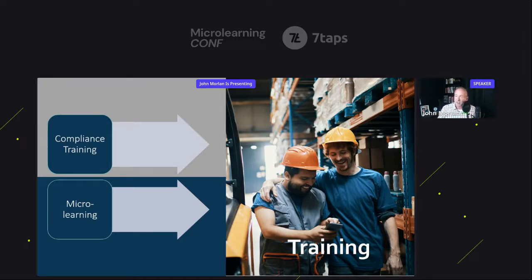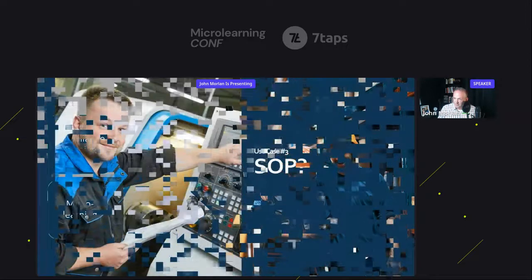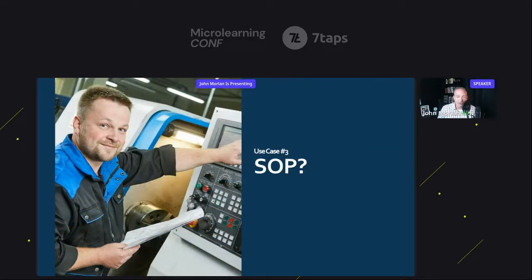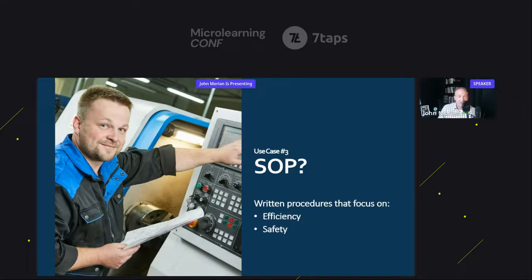So let's go to use case number three, and this is for SOPs. For any of you who don't know, an SOP is a standard operating procedure — a set of written procedures for tasks that outlines the safest and most efficient method for completing that task. It's not just safety, but also efficiency. This will help you sell it to the ops folks. If you save 10 minutes on one task, you do that task 10 times a day, and you have 100 locations — it's not hard to figure out that having an SOP means more efficient and safer operations.